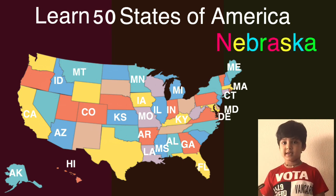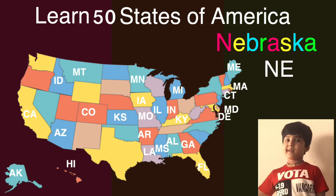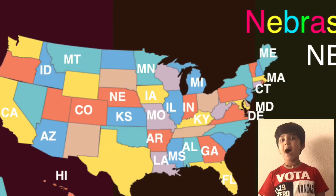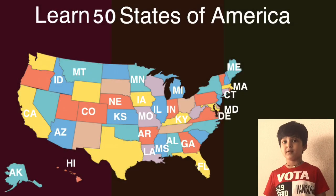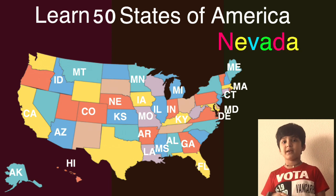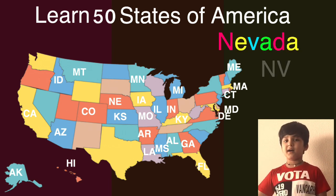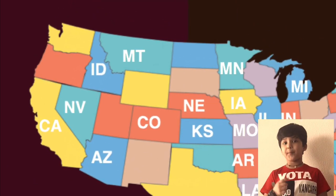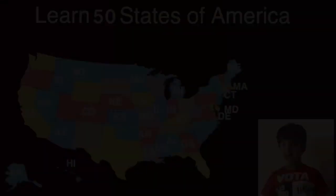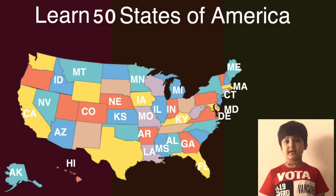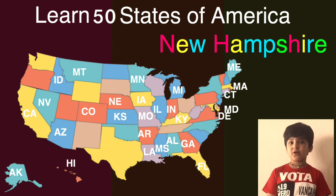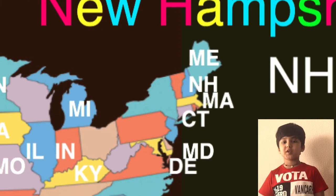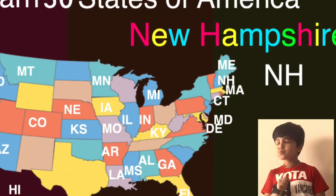The next one is Nebraska and the short one is NE. Here comes Nebraska on the map, can you guess what will come next? The next one is Nevada and the short one is NV. Here comes Nevada on the map, can you guess what will come next? The next one is New Hampshire and the short one is NH. Here comes New Hampshire on the map, can you guess what will come next?